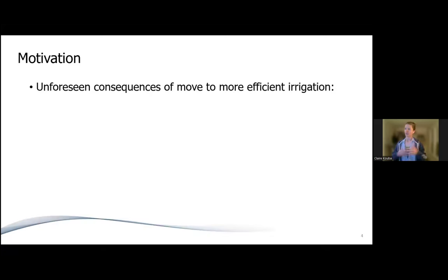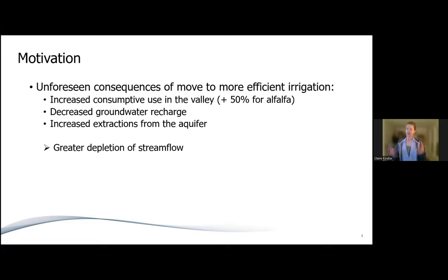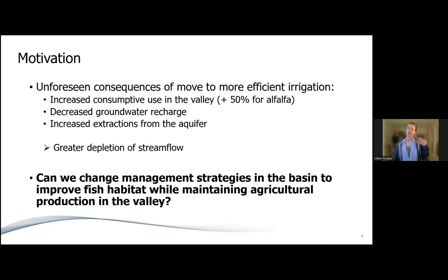The question is that unforeseen consequences of more efficient irrigation have increased consumptive use in the valley, decreased groundwater recharge, and increased groundwater pumping. All of these combine to create a greater depletion of stream flow, leading to lower minimum flows seen in the last few decades relative to the middle of the 20th century, as well as climatic factors. The big question we want to ask with SWIM is: can we change management strategies in the basin to improve fish and aquatic habitat while maintaining agricultural production? These twin goals are what we're trying to balance using this model.